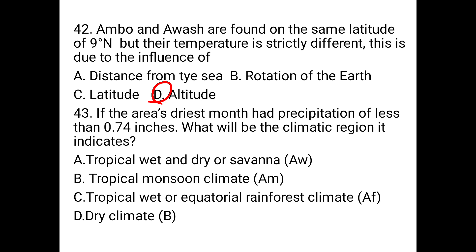Question number 43: If an area's mean annual precipitation is less than 0.74 inches, what will be the climatic region? A. Tropical wet and dry or savannah. B. Tropical monsoon desert climate. C. Tropical wet or equatorial rainforest climate. D. Dry climates. If the area's rainfall is less than 0.74 inches, the climatic area is known as tropical wet and dry savannah. The answer is A.